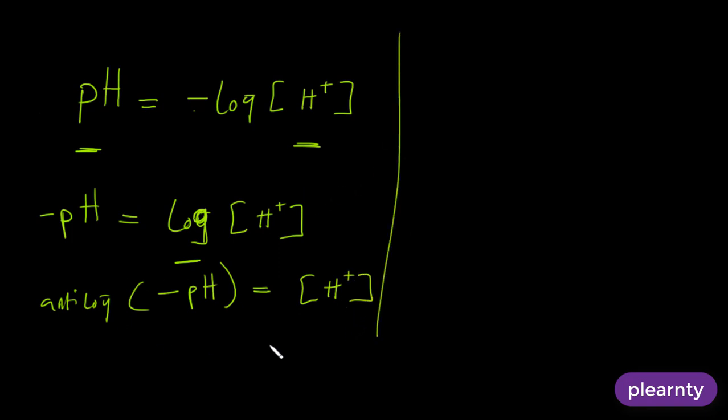So with this formula, let's rewrite it as hydrogen ion concentration is equal to the anti-log of minus pH. Anti-log of any number is equal to 10 raised to power of that number. So let's say we have anti-log x is equal to 10 raised to power x.